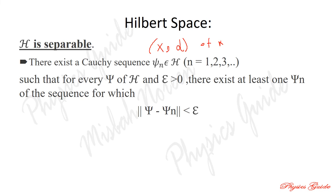To understand separable and countable dense subset: rational numbers Q have a countable dense subset of real numbers. A rational number Q = p/q where p and q are integers — and since integers are countable, rational numbers are countable.